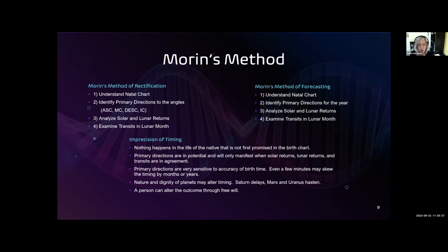And a question is, why do forecasts sometimes not materialize? And some of the reasons are, as we've said, it has to be shown in the birth chart. The primary directions are only in potential and everything else has to line up. Primary directions are very sensitive to the accuracy of birth time. And actually, for any method of forecasting, you really do need to know a pretty good birth time.